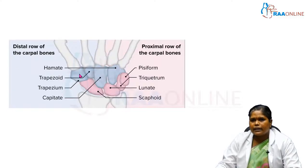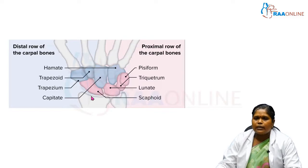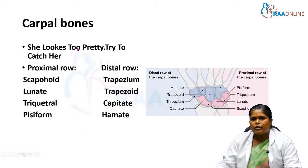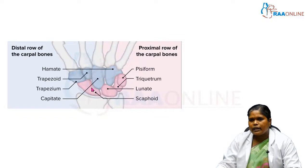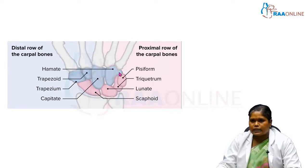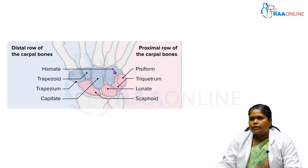The distal row, from lateral to medial, consists of trapezium, trapezoid, capitate, and hamate. We can remember all 8 carpal bone names using the mnemonic 'She Looks Too Pretty, Try To Catch Her.' In the proximal row: S for scaphoid, L for lunate, T for triquetrum, P for pisiform. In the distal row: T for trapezium, T for trapezoid, C for capitate, H for hamate.